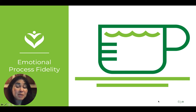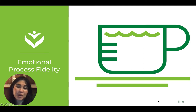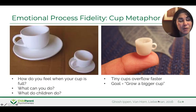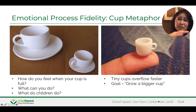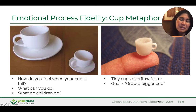The second strand is emotional process fidelity, and this is the icon for that strand—a cup and saucer. Our bodies are a lot like cups. We all know when our cups are full—'I have had it up to here.' And then we think about what do we need to do when our cups are this full? Often what we need to do is take a break, because we've had enough. We might need to move our bodies, feel something soft, be with somebody that we love, or have a cup of tea.